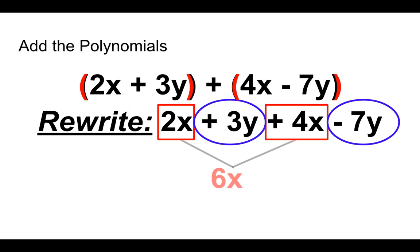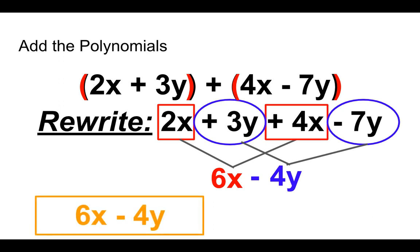2x plus 4x will give us 6x. 3y minus 7y will give us negative 4y's, and that's our answer, 6x minus 4y. We don't need the parentheses because we're adding.